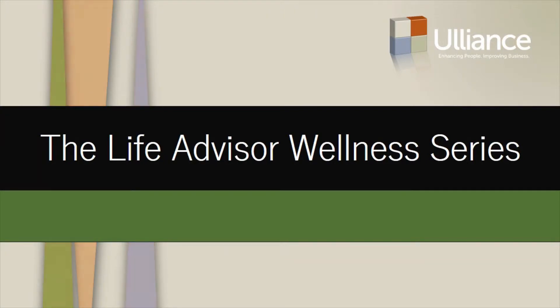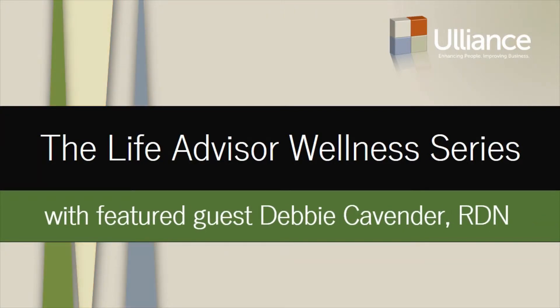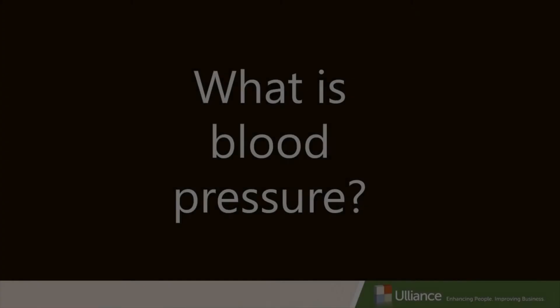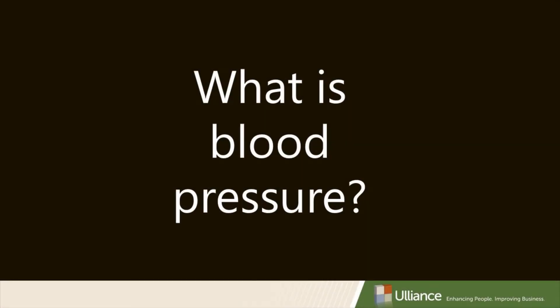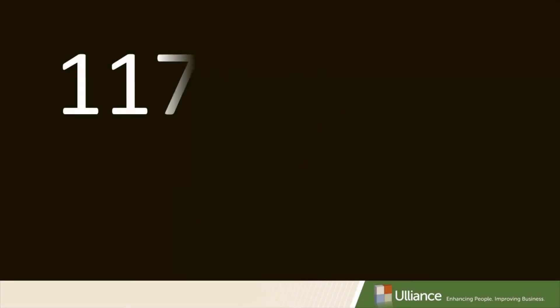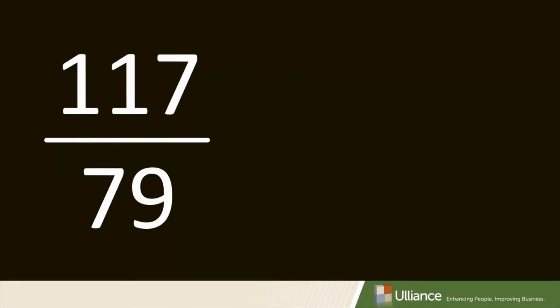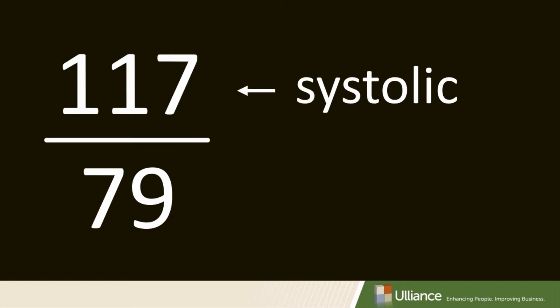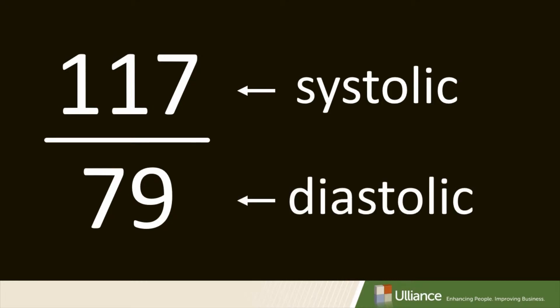Uliance presents the Life Advisor Wellness Series. What is blood pressure? You're given two numbers, one number over another. The first number, or the top number, is called systolic. The bottom number is called diastolic.